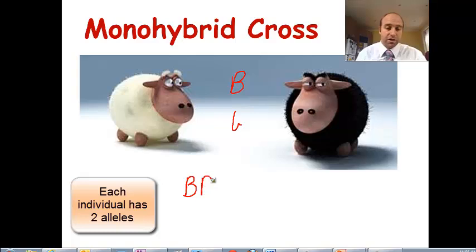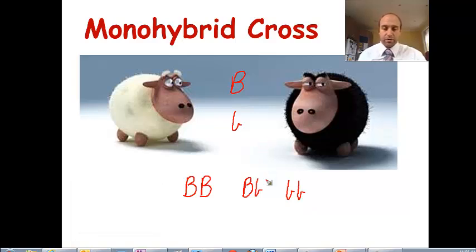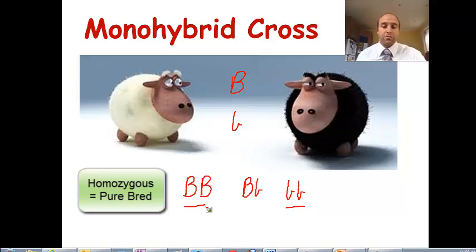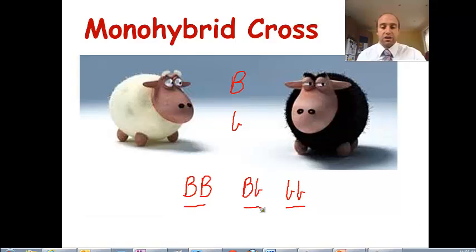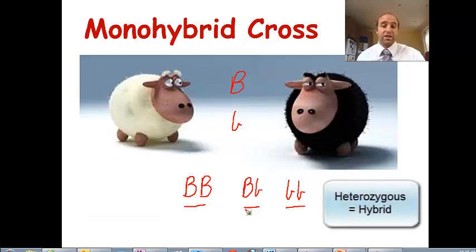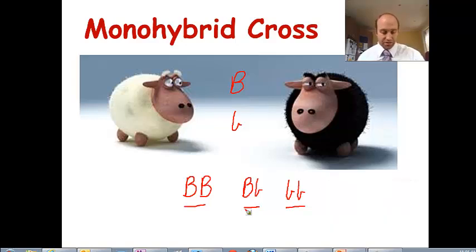for our genotypes is to have two big alleles which we call homozygous dominant, have one big and one small which is the heterozygous, and two small which is the homozygous recessive. Now the two homozygous individuals we can also call them purebred, and this individual here which is the heterozygous we can also call that the hybrid. So you might see a couple different terminologies there as we go through.